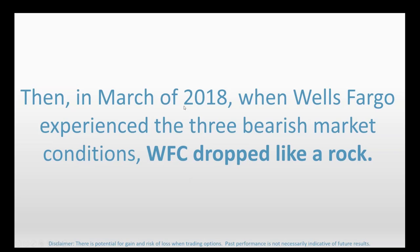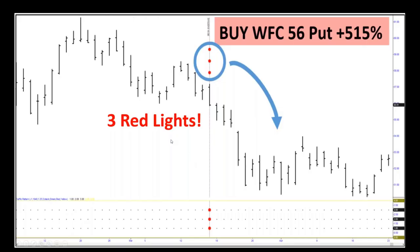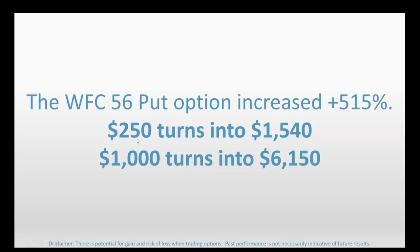In March of 2018, when Wells Fargo experienced the three bearish conditions, WFC ended up dropping like a rock. Each condition can either be bullish (green) or bearish (red), and when all three flash red it creates a bearish forecast. We recommended buying put options because puts allow us to profit from falling prices. We broadcasted a buy WFC 56 put, and that was up 515%. In dollars: $250 grows to $1,540, and $1,000 grows to $6,150.